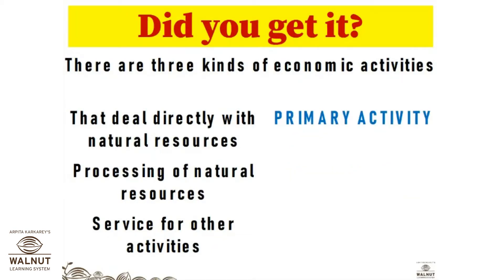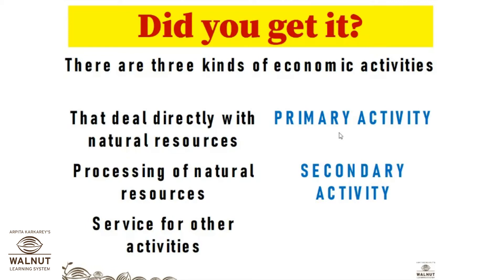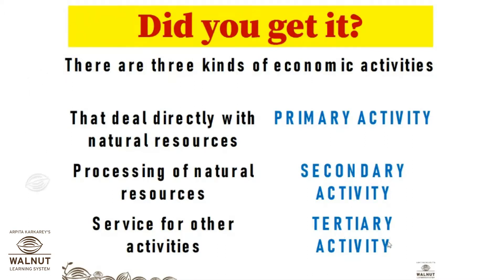Where we deal with natural resources directly, these are called primary activity. Processing of natural resources is known as secondary activity. Service for other activities — banking, transport, trade, etc. — are known as tertiary activity. Tertiary means of third rank, or the subsequent activity which gives support to primary and secondary activity.